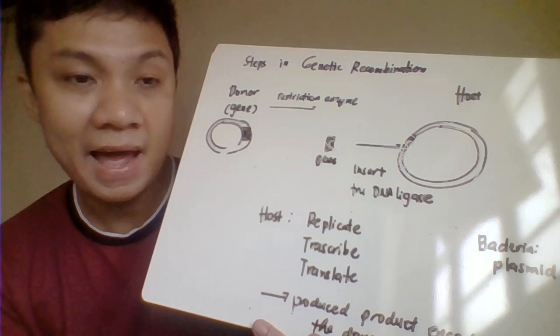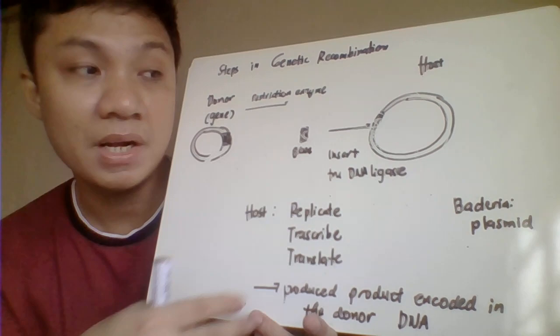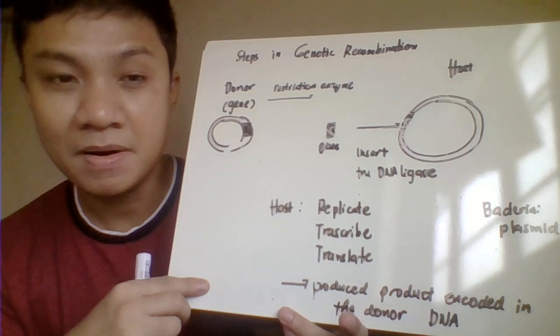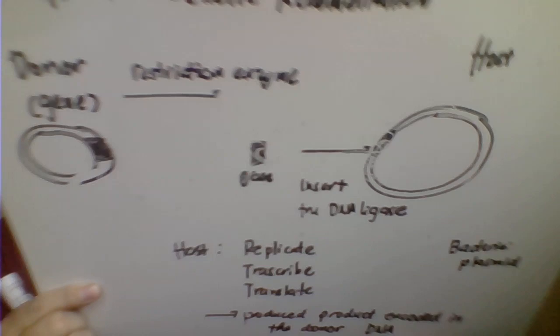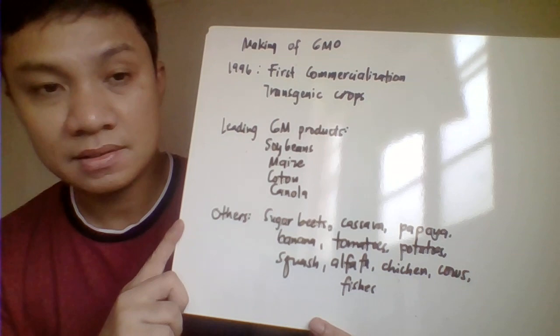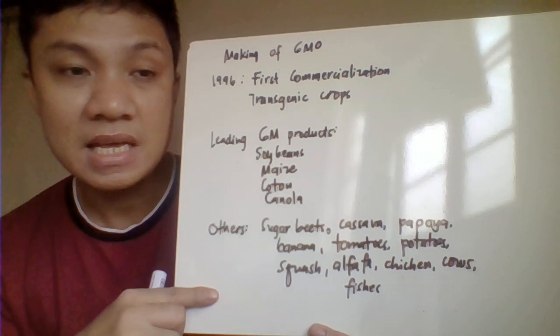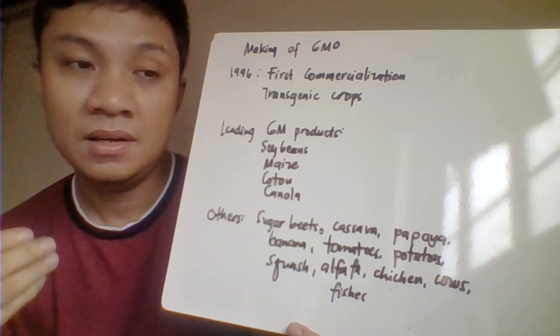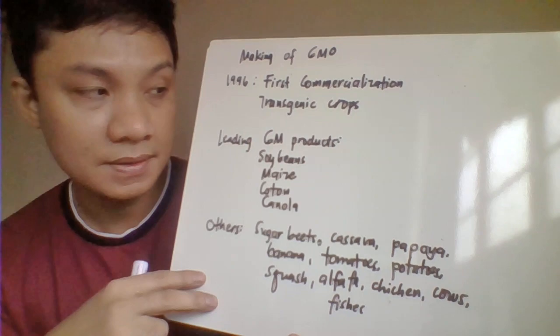Bacteria are commonly used as host because they replicate quickly and can produce a product rapidly. For example, the insulin we use is manufactured through genetic recombination using this process. However, what we are discussing today is not only bacteria but also other organisms — it could be plants or even animals. The manufacturing of different genetically modified crops started in 1996 with the commercialization of genetically modified products through the transgenic process. Among the leading GMO products are soybeans, maize or corn, cotton, canola, sugar beets, cassava, papaya, and many others, including animals modified through genetic engineering.